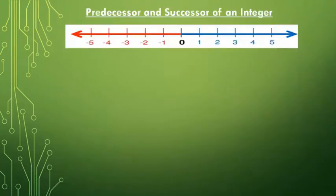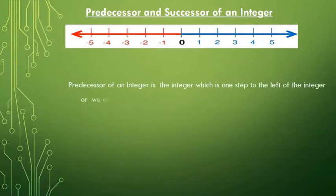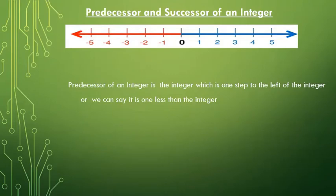The predecessor of an integer is the integer which is one step to the left of the given integer, or we can say it is one less than the given integer. For example, the predecessor of minus three is minus four.